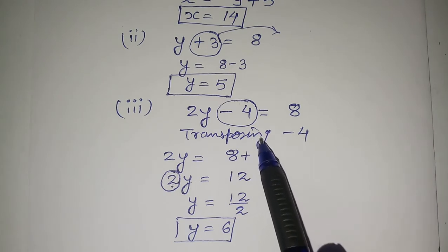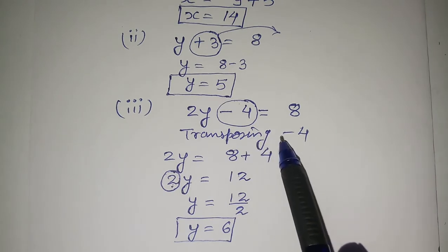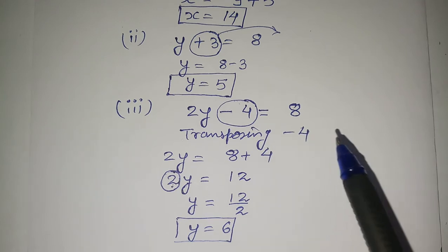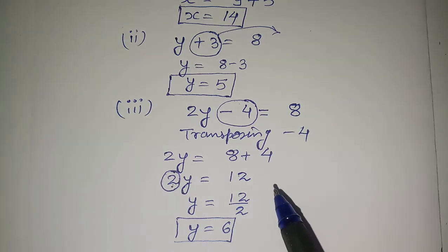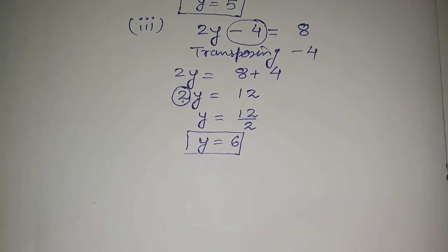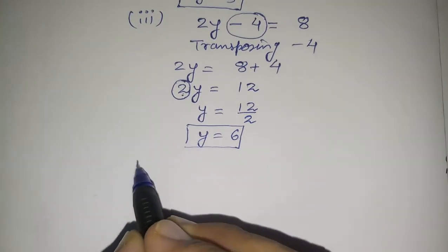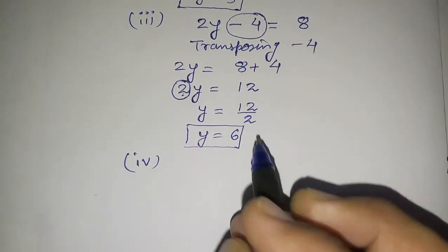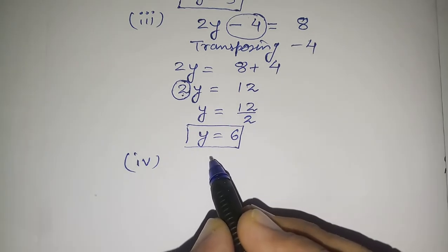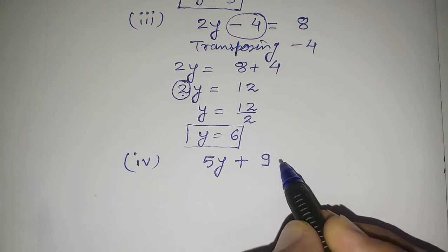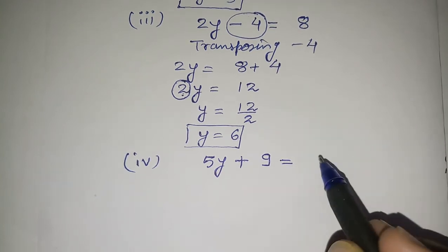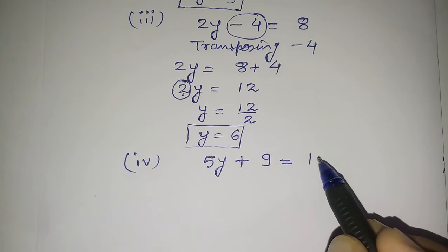Transposing deals with only minus and plus — adding and subtracting. Transposing means the same as adding or subtracting. Let's do one more example: 5y plus 9 equals 19.